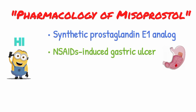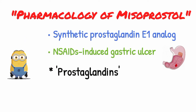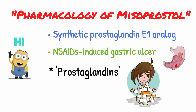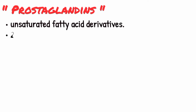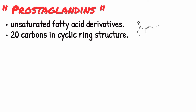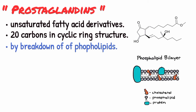But before moving towards our topic, let's have a brief review about prostaglandins, as this will help you to easily understand the pharmacology of misoprostol. Prostaglandins are basically unsaturated fatty acid derivatives containing 20 carbons in a cyclic ring structure, and are produced at the cellular level by the breakdown of phospholipids of the lipid bilayer of the cell membrane.